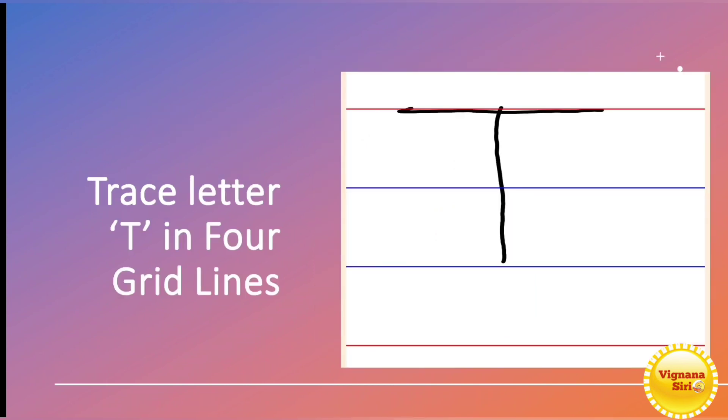Now in four grid lines, you have to write the capital letter T in the first three lines, okay? So that is the capital letter T. Now I will show everything, observe carefully.